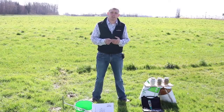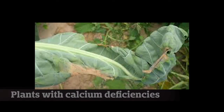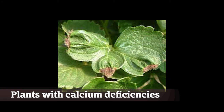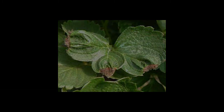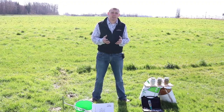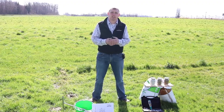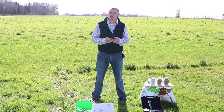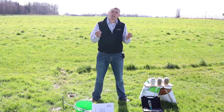Nutrient deficiencies from calcium can look like hollow core in broccoli, hollow heart in potatoes, bitter pit in apples, and blossom end rot in tomatoes. If you've seen any of those conditions, you probably have a calcium deficiency in your plants. One of the most common and early signs of calcium deficiency is a browning or die-back at the tips of new growth.